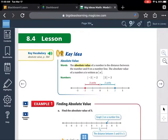Okay, the absolute value simply means it's distance from zero. It's a distance between the number and zero.